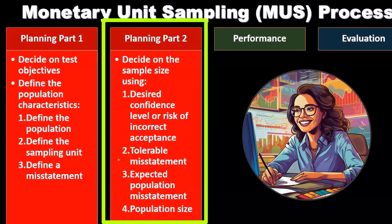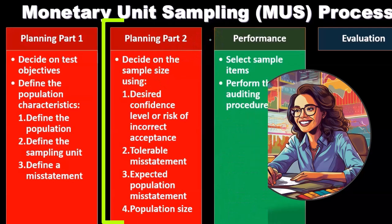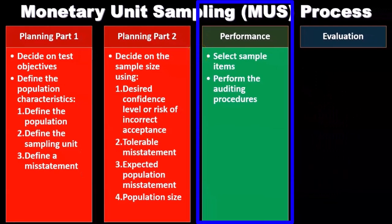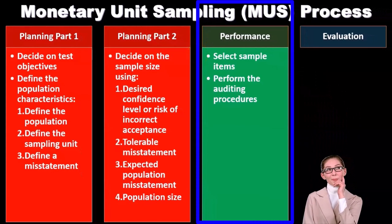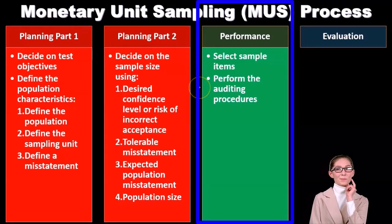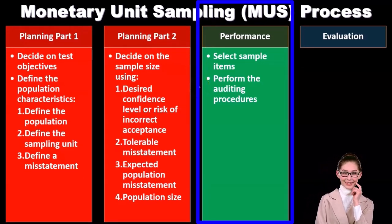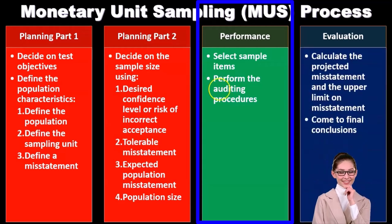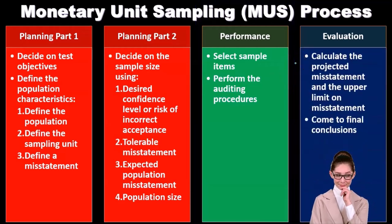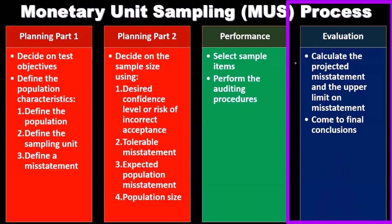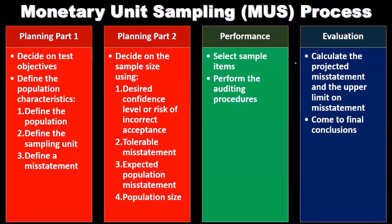Once we have the planning set up, we'll go into the actual performance — we'll actually be doing the process here. We're going to select the sample items, then perform the auditing procedures on them. Then we'll have the evaluation: once we have performed the monetary unit sampling, we'll calculate the projected misstatement and the upper limit on misstatement, and then come to a final conclusion.